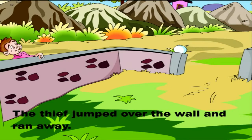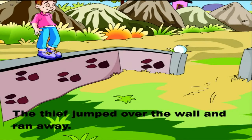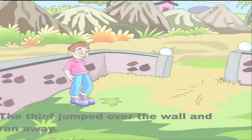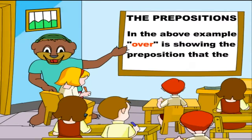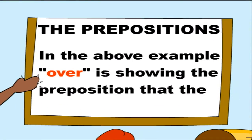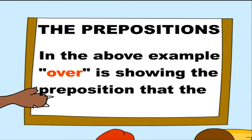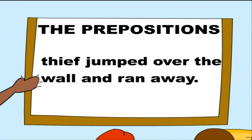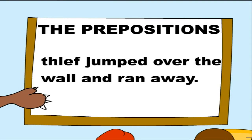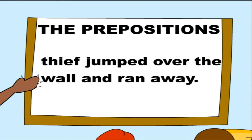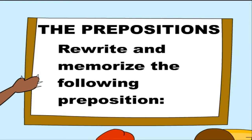The thief jumped over the wall and ran away. In the above example, 'over' is showing the preposition that the thief jumped over the wall and ran away.